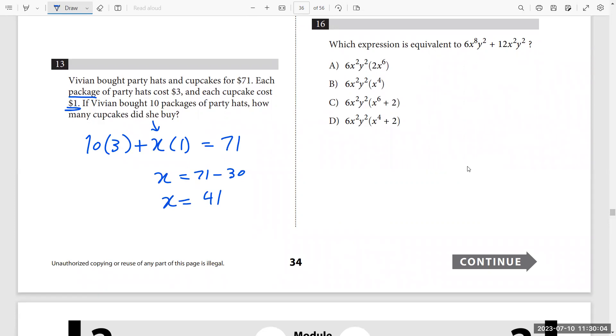Last question here in this video, number 16. Which expression is equivalent to this one? As you see here, we try to factor it by taking out the highest common factor. The highest common factor is 6x squared y squared. Now divide each term by this highest common factor. So you have x to the power of 8 divided by 6 is one, no need to write. So x to the power of 8 divided by x squared is x to the power of 6, and y squared over y squared is one, plus 12 divided by 6 is 2, and x squared y squared divided itself is one. So this is the answer. 6x squared y squared times x to the power of 6 plus 2, number C.